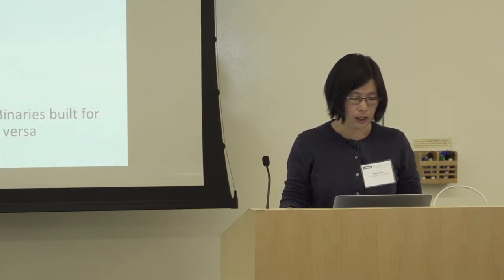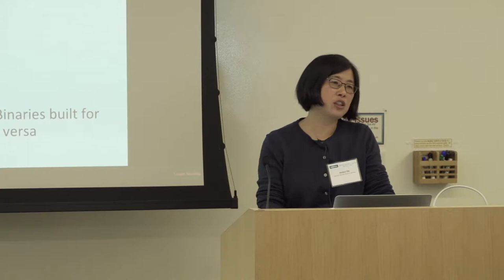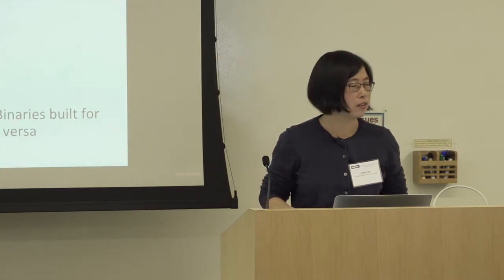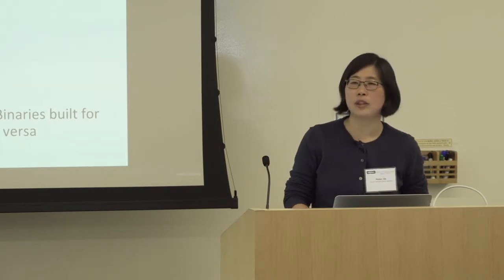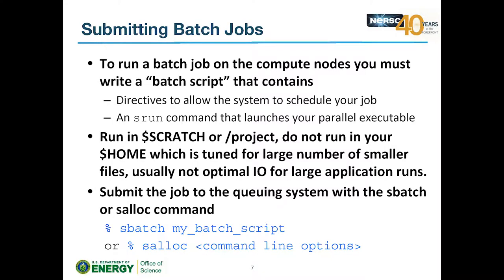On Cori, there are Haswell nodes and KNL nodes. Binaries compiled for Haswell will run on KNL, but you should compile separately for KNL to utilize node features for vectorization and get better performance. There are also libraries targeted for KNL. When you submit a job to a compute node, you write a batch script with directives specifying the resources you want. The script includes an srun command for parallel executables — you do not need srun for sequential executables.